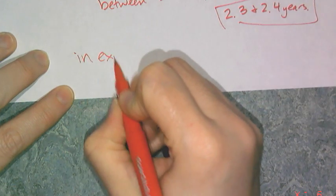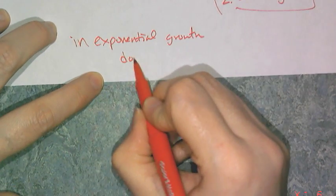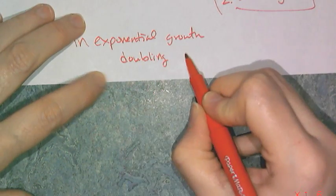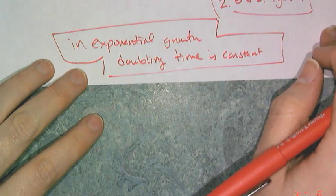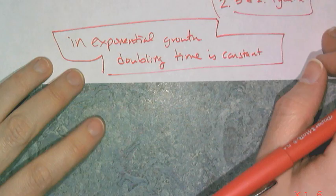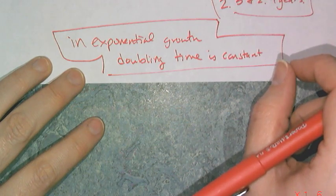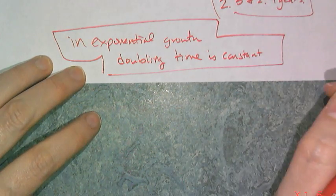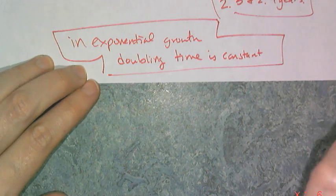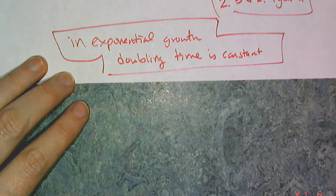In exponential growth, that doubling time is going to be a constant number. Now what the doubling time is depends on the rate of increase. If you have a faster rate of increase, that means you have a slower doubling time. If you have a really slow rate of increase, like you only increase by 0.01%, then you're going to have a really long doubling time.